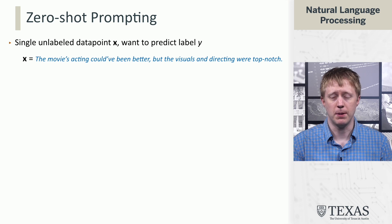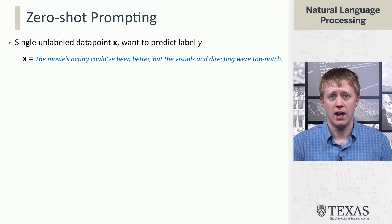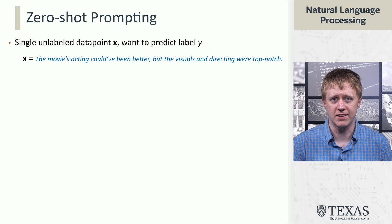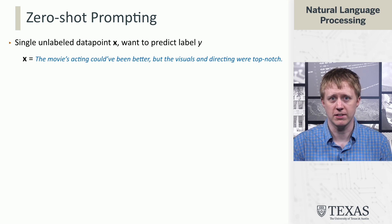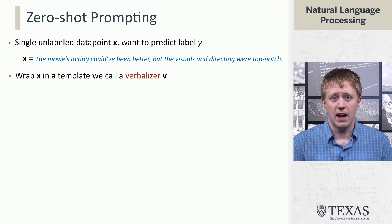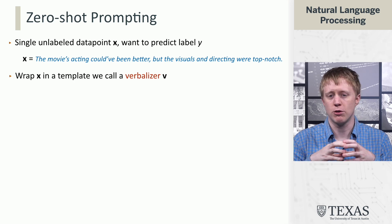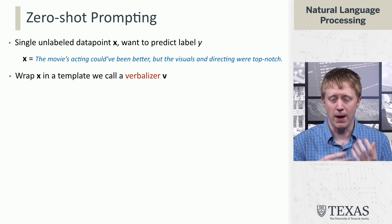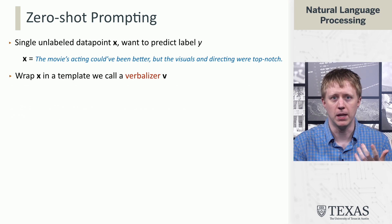Let me show you the basic idea behind zero-shot prompting and some of the basic terminology. What we're going to do is use our language model to label or predict on a single unlabeled data point X. We're going to come back to sentiment analysis here and suppose that X is a short movie review. We need to take that raw data and wrap it in a form that's going to be passed to the model, which we're going to call a verbalizer.